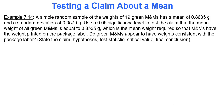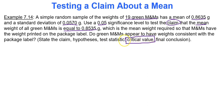Now let's do a kind of tricky situation. A simple random sample of the weights of 19 green M&Ms has a mean of 0.8635 grams and a standard deviation of 0.0570. Use a 0.05 significance level to test the claim that the mean weight of all green M&Ms is equal to 0.8535, which is the mean weight required so that M&Ms have the weight printed on the package label. Instead of using the p-value approach, we'll use the critical value approach.